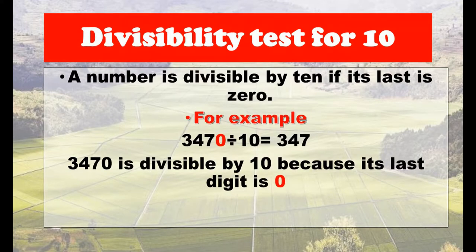Divisibility test for ten: a number is divisible by ten if its last digit is zero. For example, 3,470 divided by 10 equals 347. The number 3,470 is divisible by 10 because its last digit is 0.